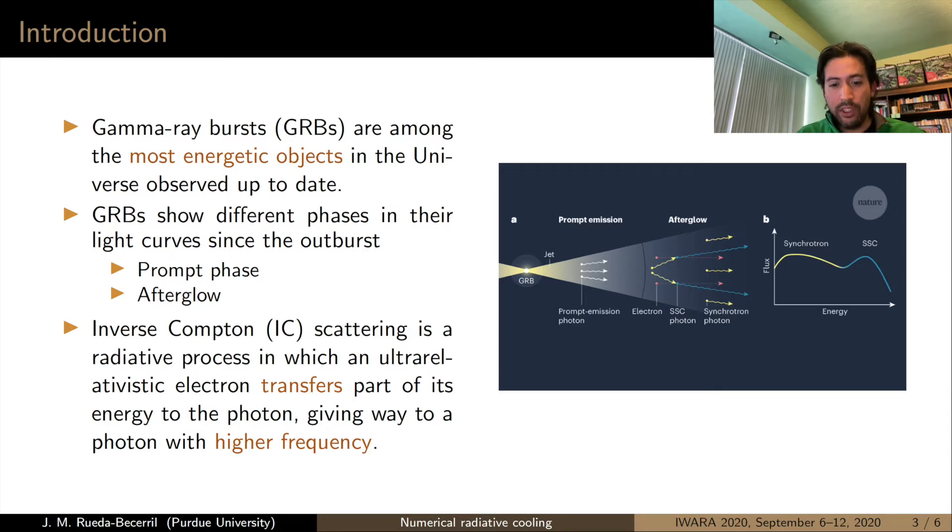The astrophysical object that I would like to study today are gamma ray bursts. These objects are the most energetic that have been observed up to date. These objects are super energetic explosions that show different phases. In the first few seconds they show most of the energy and afterwards they show a decay in the light curves.